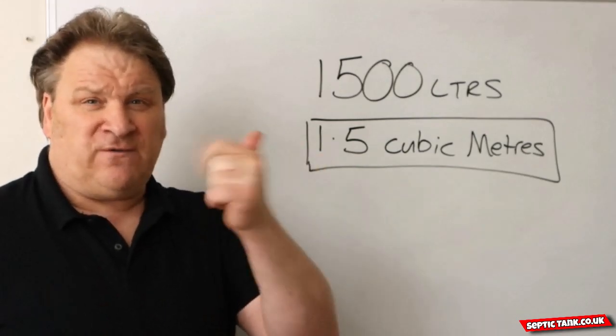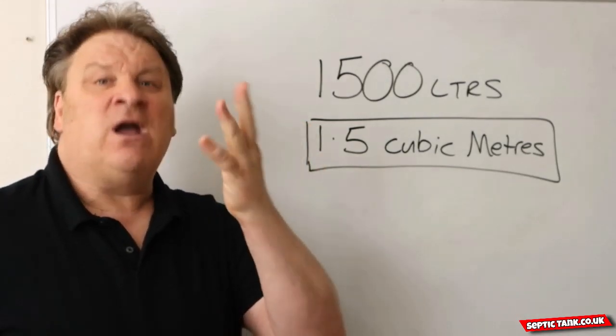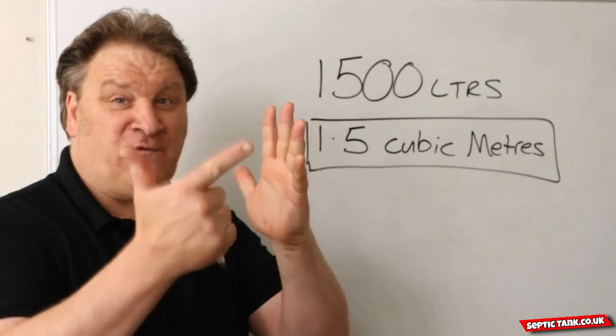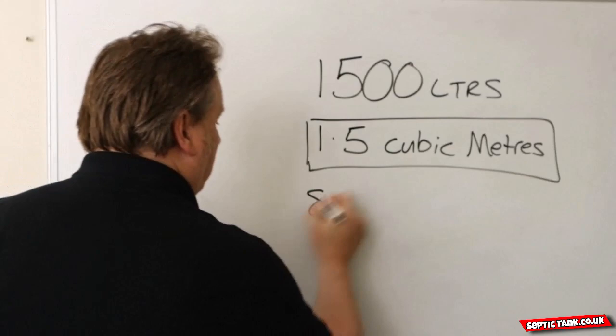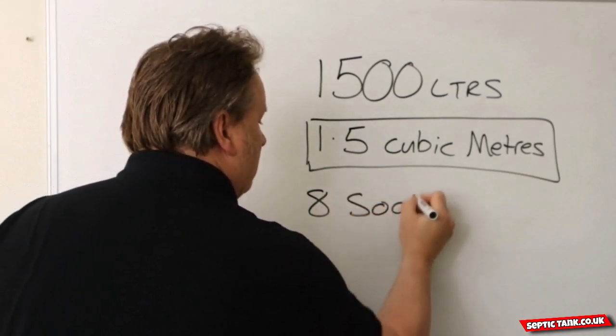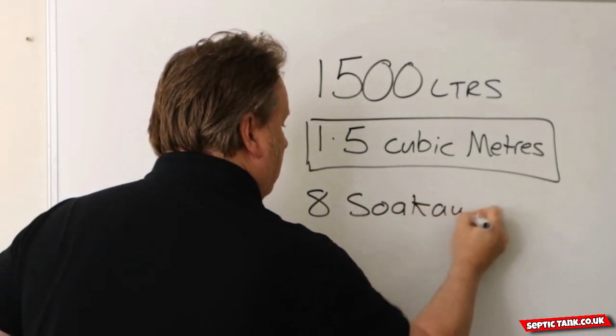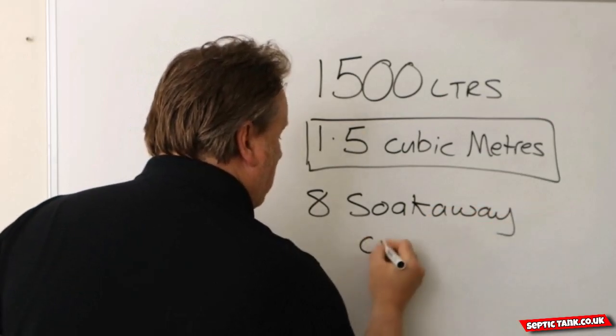So we've got 200, 400, 600, 800, 1000, 1200, 1400, 1600. That works out to eight soakaway crates.